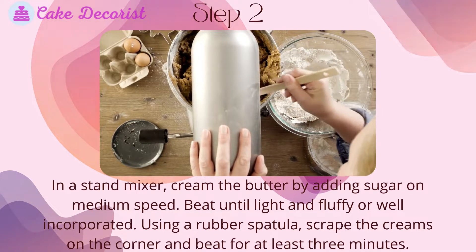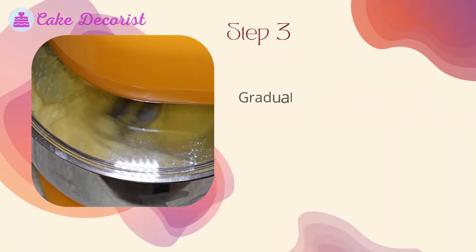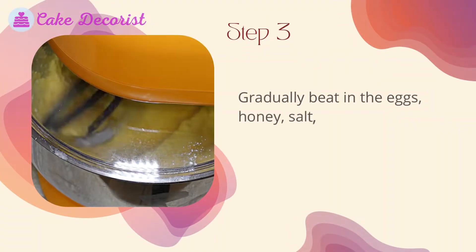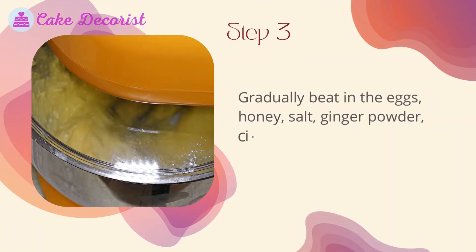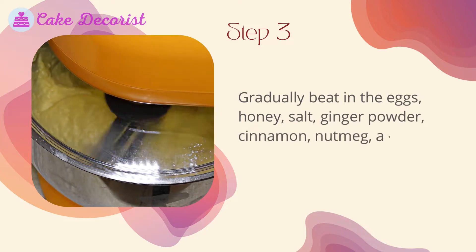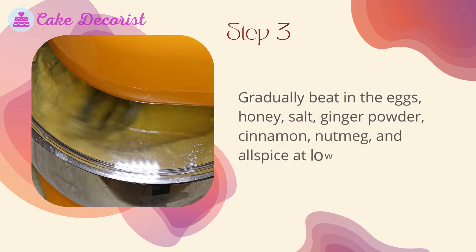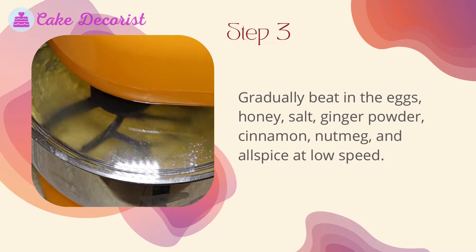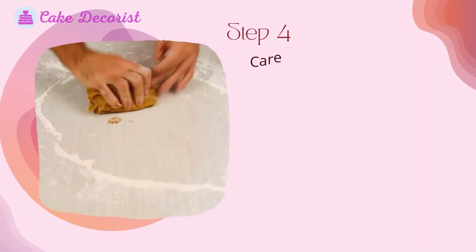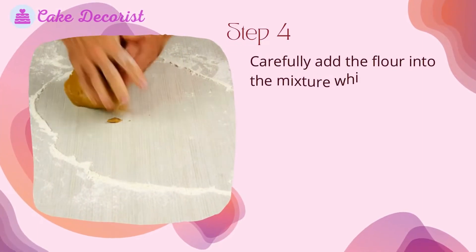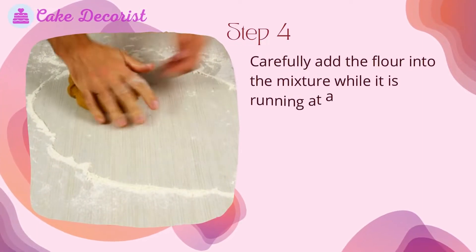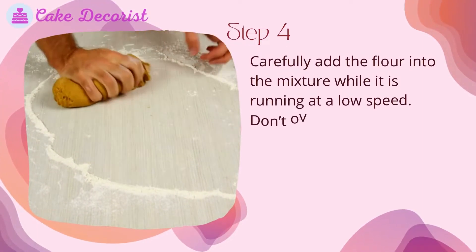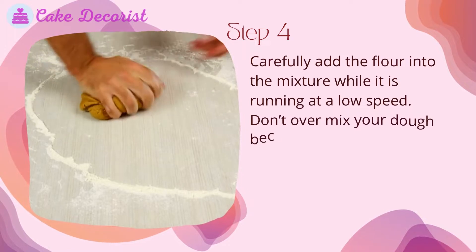Using a rubber spatula, scrape the cream on the corners and beat for at least three minutes. Step three: gradually beat in the eggs, honey, salt, ginger powder, cinnamon, nutmeg, and allspice at low speed.